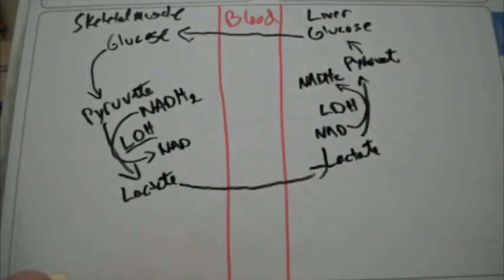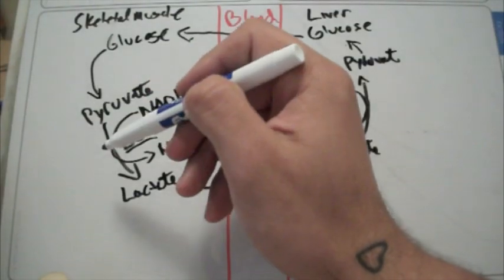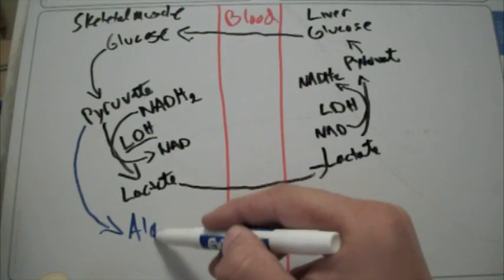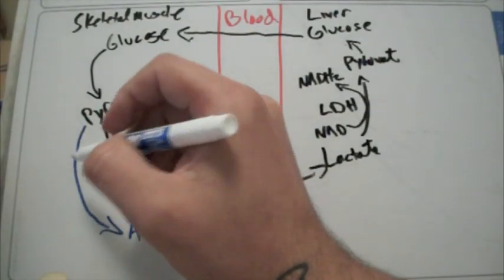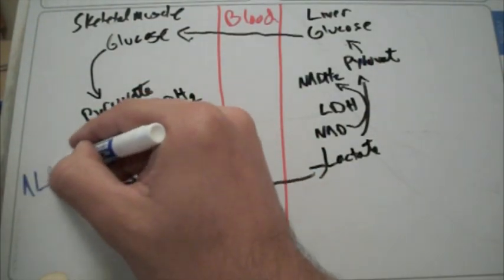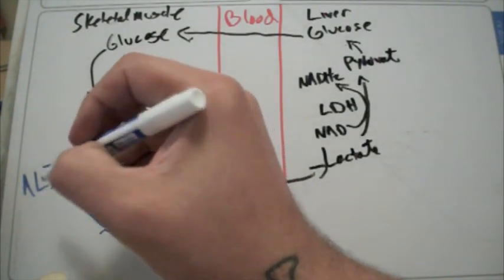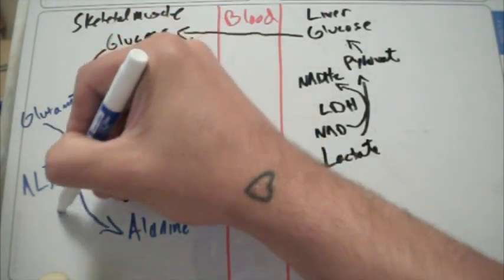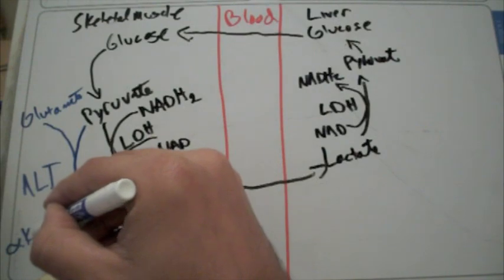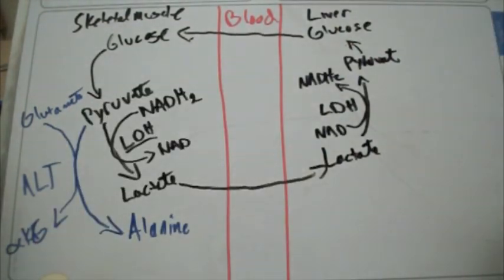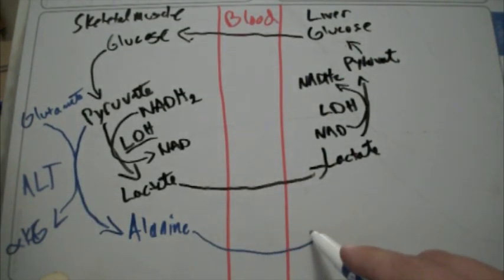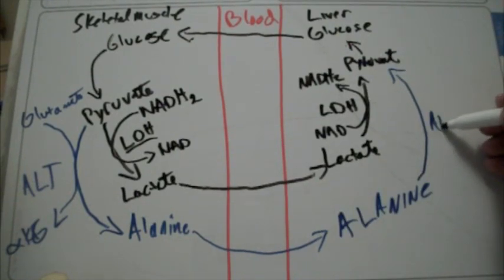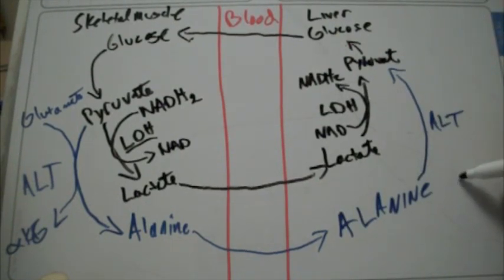The second part to this: there's a similar cycle where from pyruvate, we get alanine. This uses alanine aminotransferase. Glutamate goes in, alpha-ketoglutarate comes out, alanine goes into the liver, and changes back to pyruvate through the same exact mechanism.